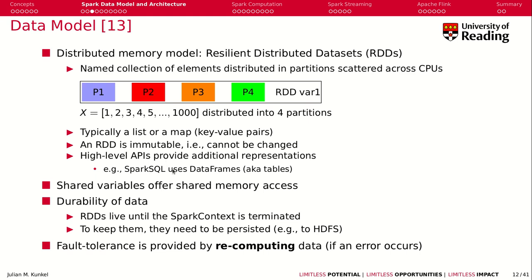The new high-level APIs of Spark provide additional representations. For example, with Spark SQL we can use DataFrames, which are proper tables with schema. As a second option, Spark provides shared variables to which all processors can access.